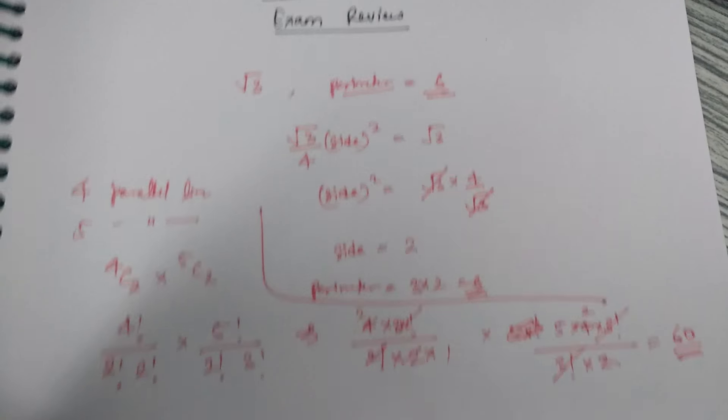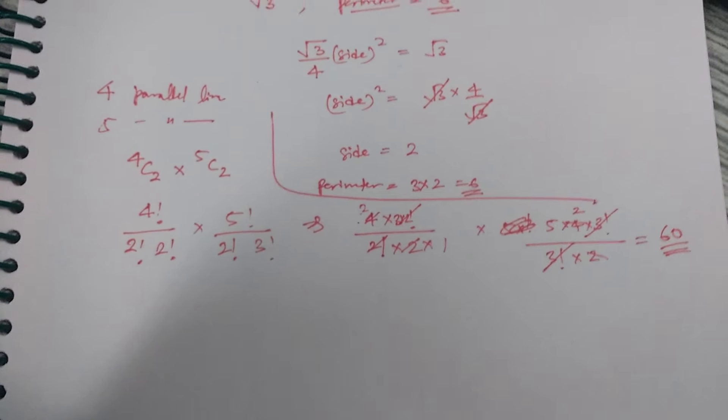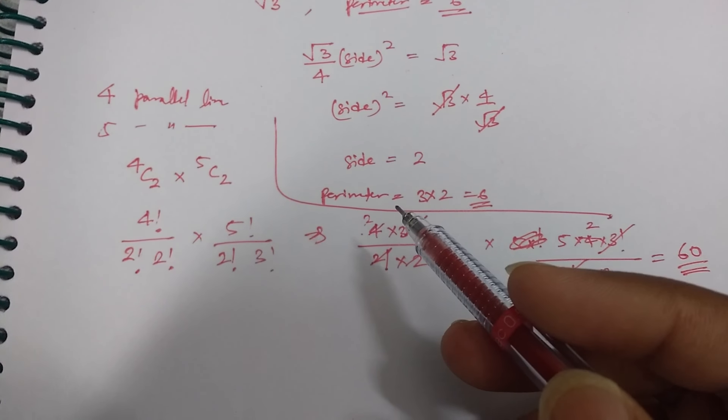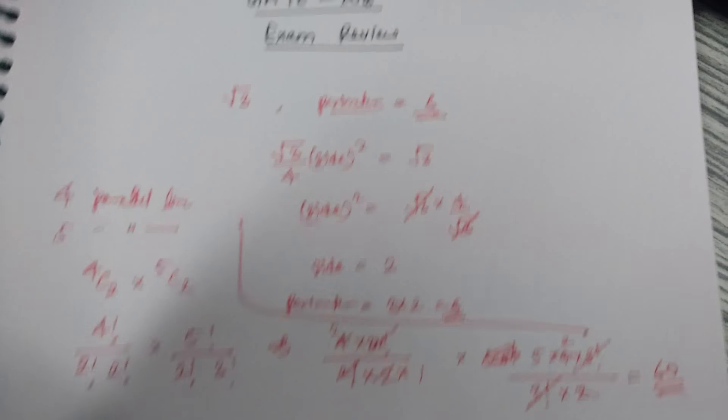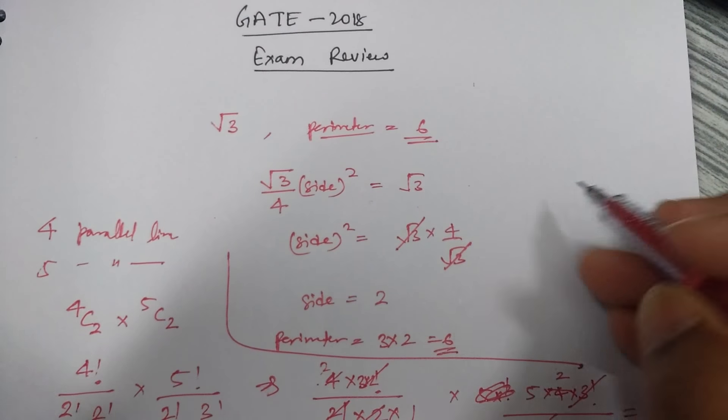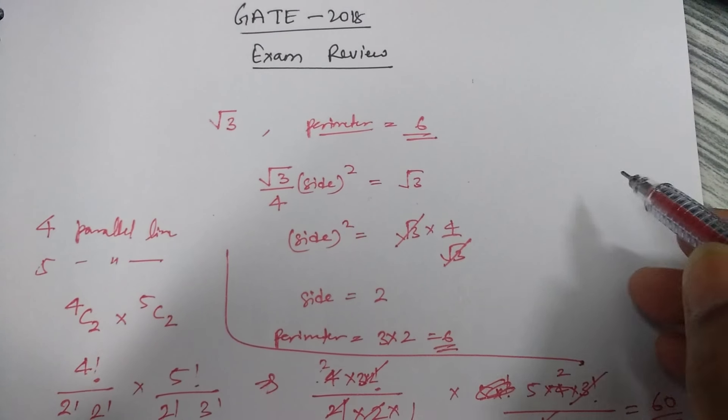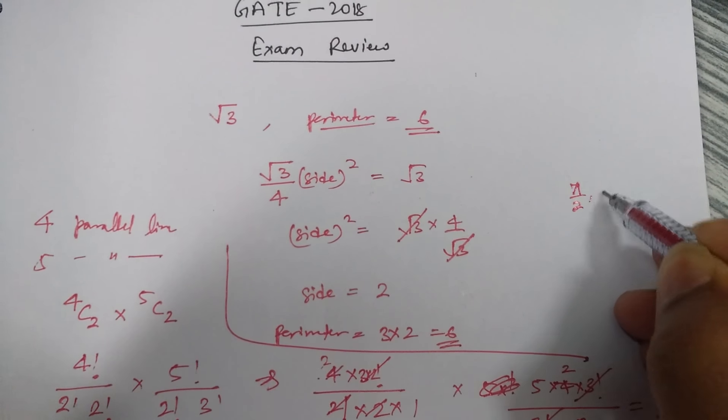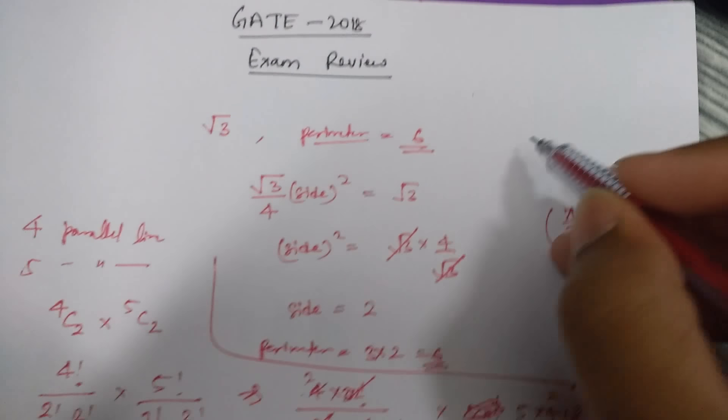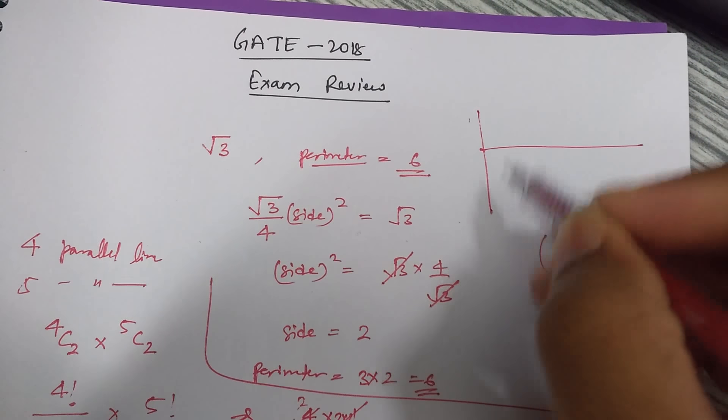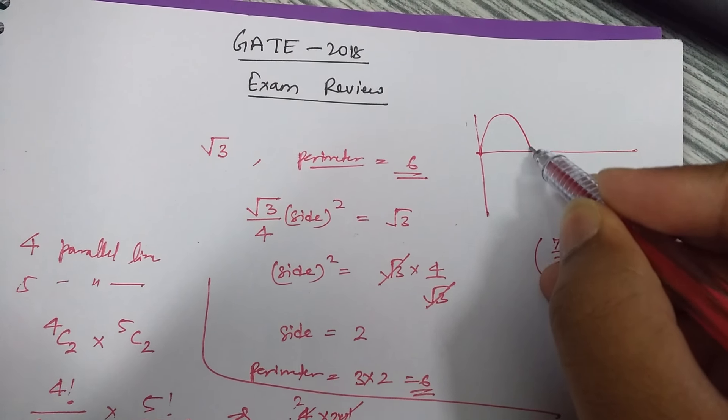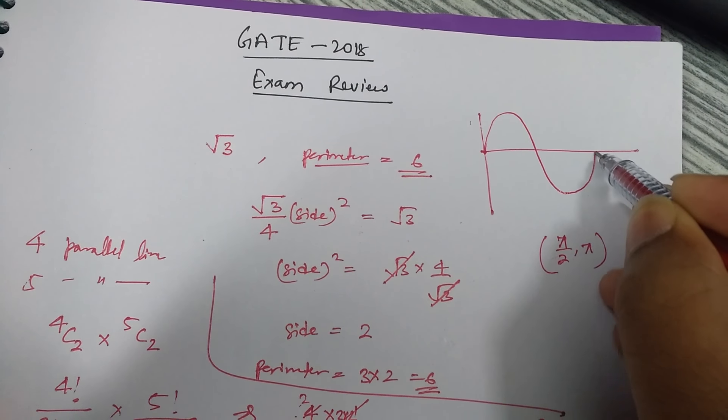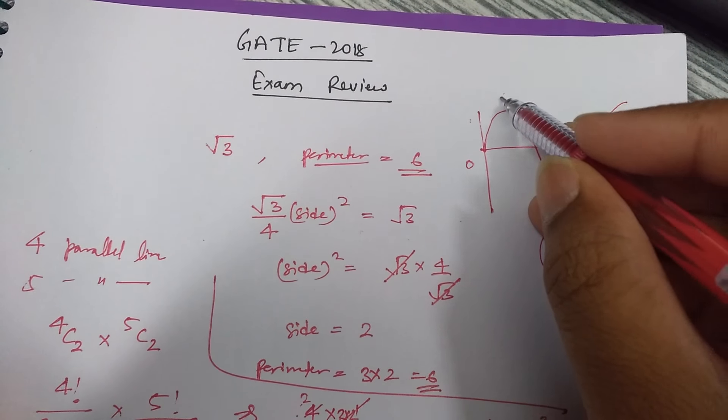Okay, for parallel line question. Now these were from aptitude which I remember and one more question was there that sine and cosine function, they were asked in which interval they are decreasing. If I remember exactly, that answer was pi by 2 to pi, okay, because if you know what sine graph is...